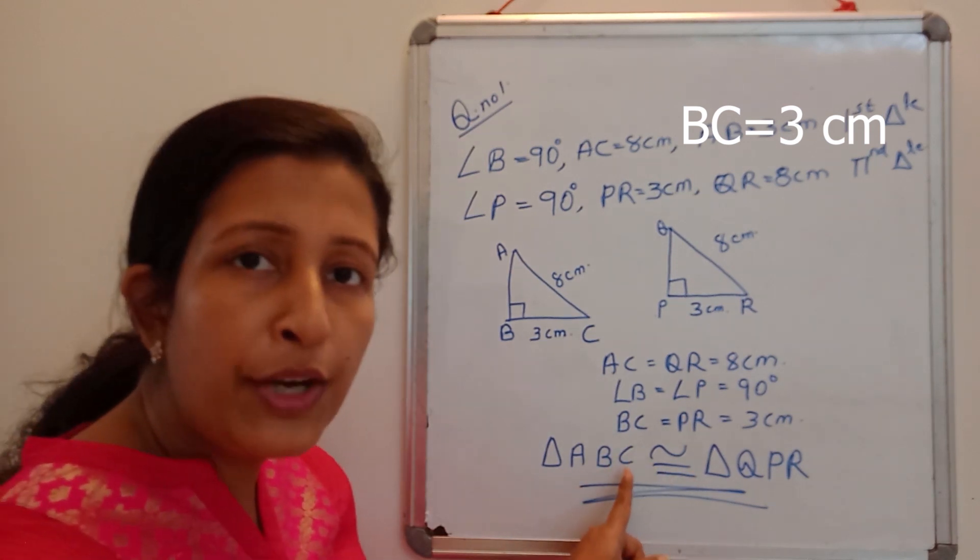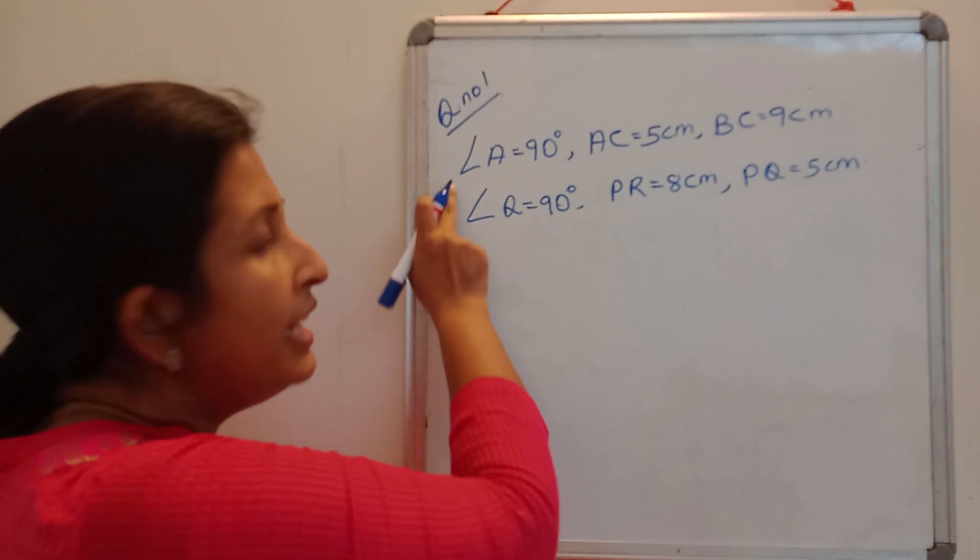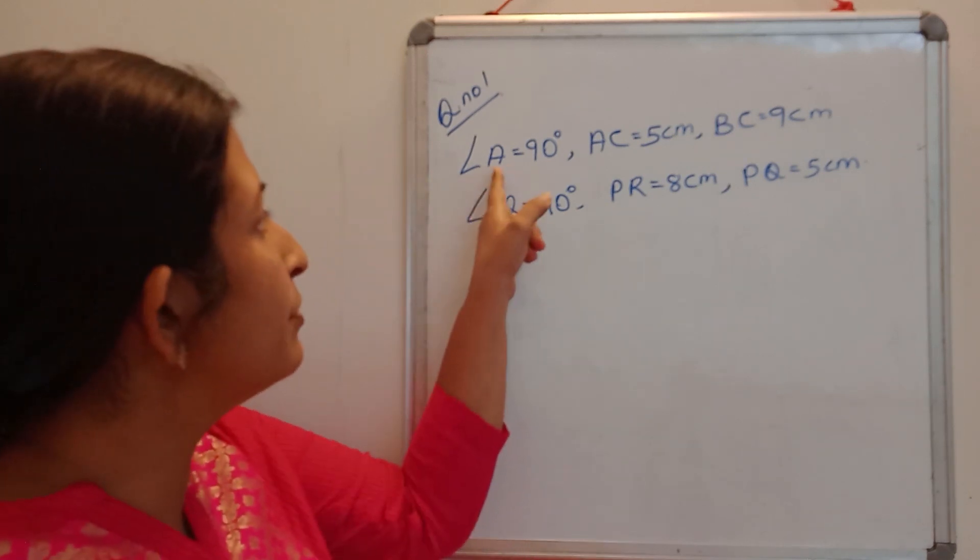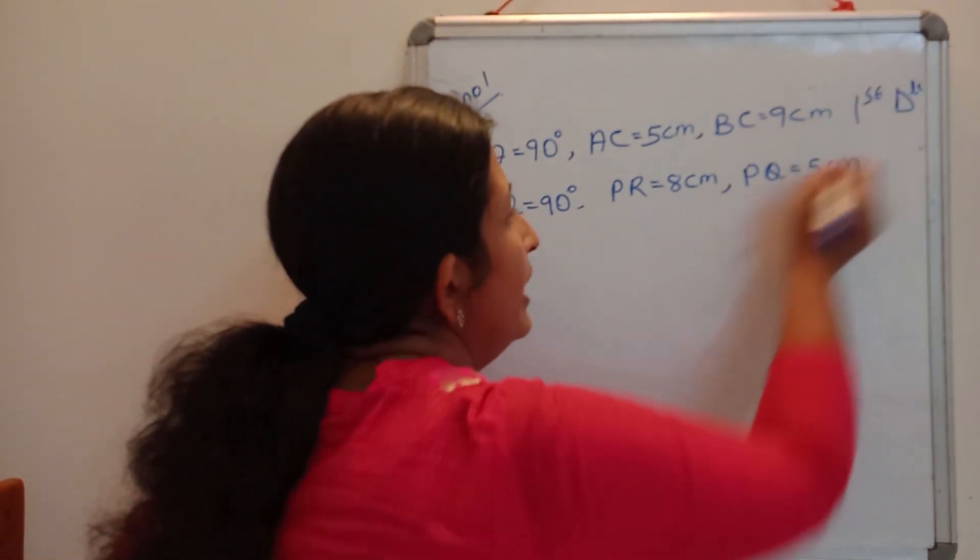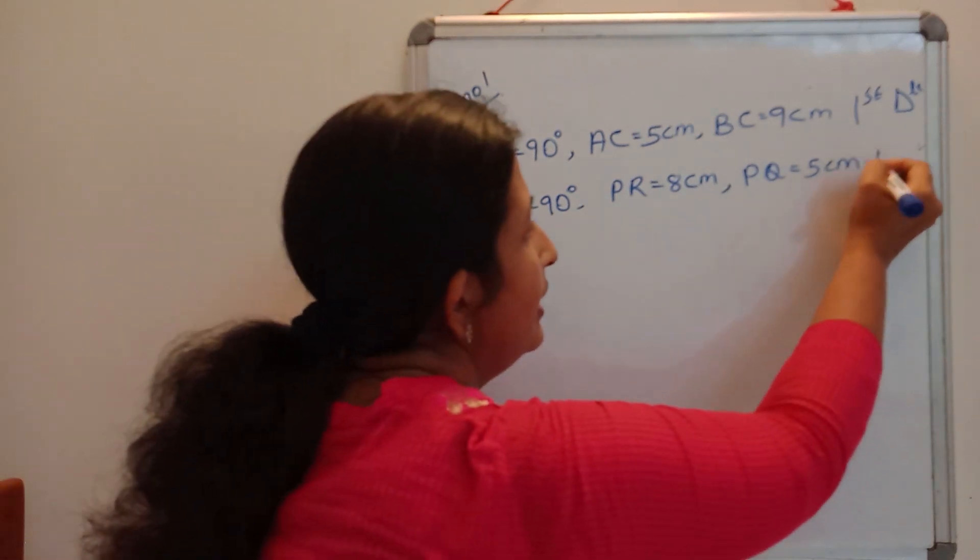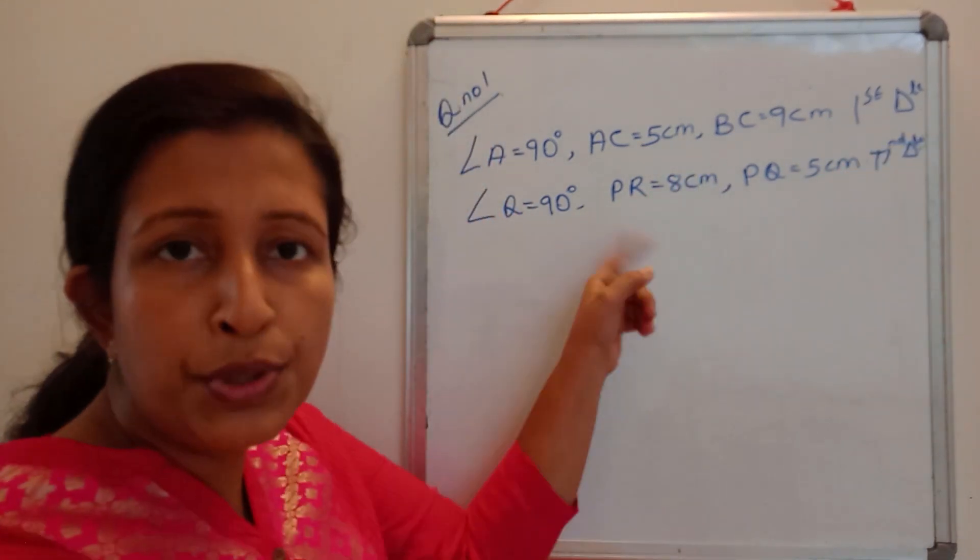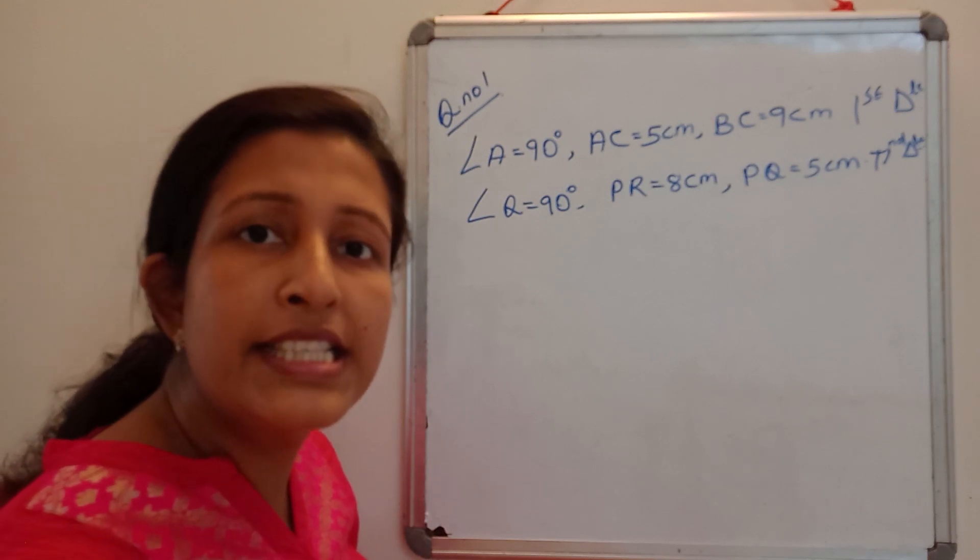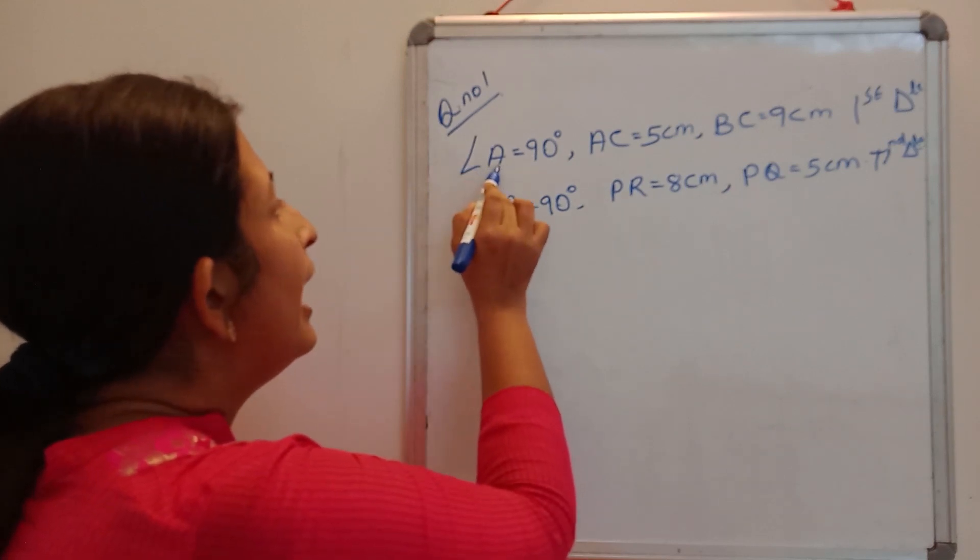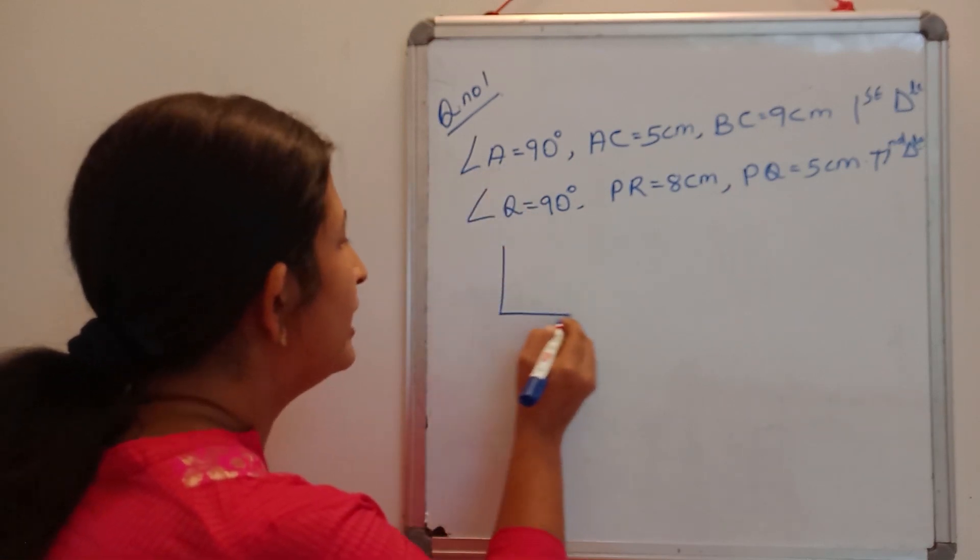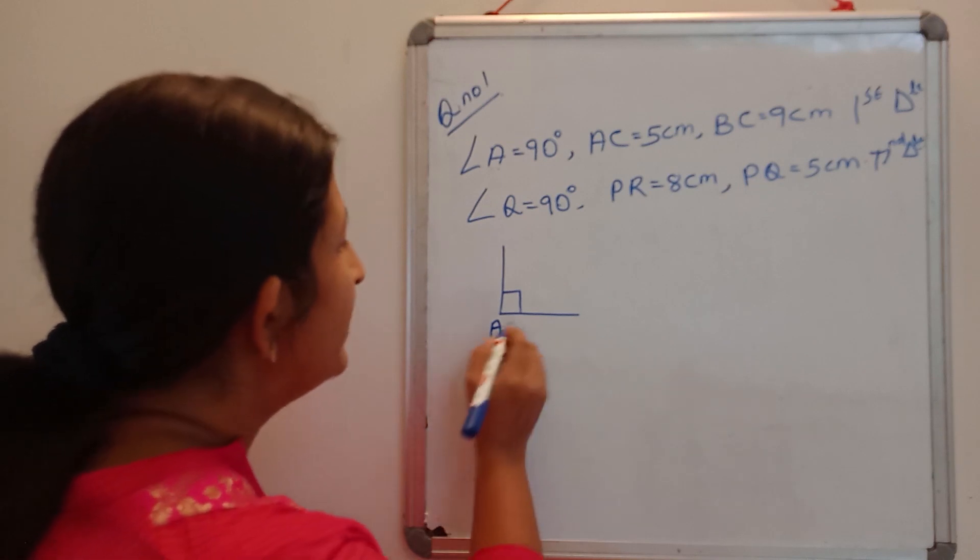Here too we are going to construct two triangles. For the first triangle they have given three data, and for the second triangle they have given three data. We are going to construct these two triangles and after that we should conclude that is it congruent or not by using RHS criteria. So at the point A the triangle is right angle. So here I can mark it as A. A is 90 degree and AC is